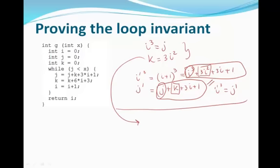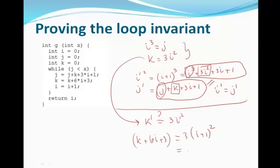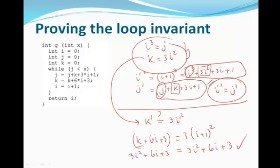To prove k equals 3i squared, I need to prove that k prime equals 3 times i prime squared. k prime equals k plus 6i plus 3, and i prime equals i plus 1. So 3 times i prime squared gives 3i squared plus 6i plus 3. Since k equals 3i squared by the invariant hypothesis, the left side also gives 3i squared plus 6i plus 3. Hence, I can prove that k equals 3i squared is a loop invariant. And using that, I can confirm that i cubed equals j is also a loop invariant. Both of these are loop invariants.